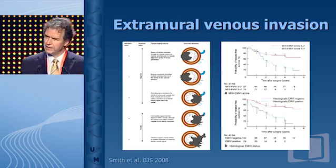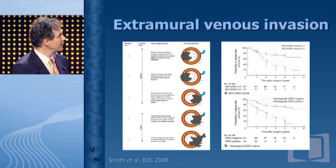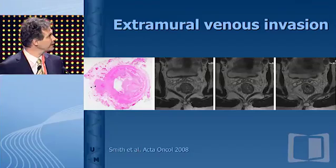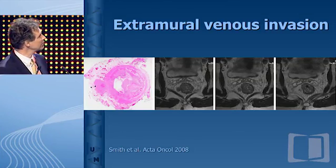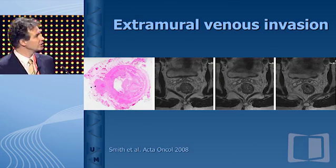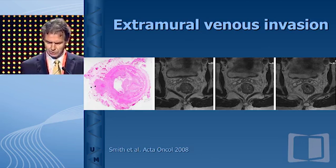About extramural venous invasion: we haven't been looking at that too much, but it's been reported recently. There is a scale — it's quite cumbersome to remember. In a univariate analysis, it is predictive, but when you mix it with lymph nodes and N2 disease, it's in the same league. What is being called EMVI, we would probably have called a big lymph node or a big chunk of tumor in the mesorectum. So I think it's in the same league as N or N2 disease.